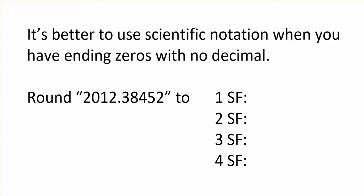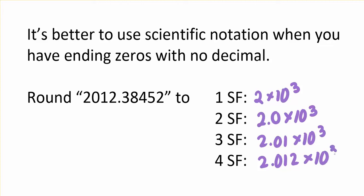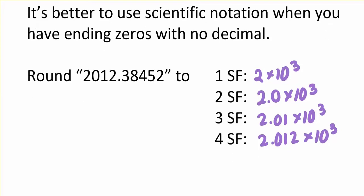It's better to use scientific notation if you have ending zeros where there's no decimal point shown. This comes up when you have larger numbers and you need to round them off. For example, for this number, to write it with one significant figure, I would write 2 times 10 to the third. For two sig figs I would say 2.0 times 10 to the third. For three, 2.01 times 10 to the third. So I've put it in scientific notation. Notice that there are some other options. For four sig figs I could do this.